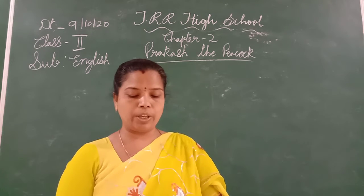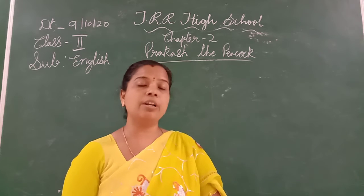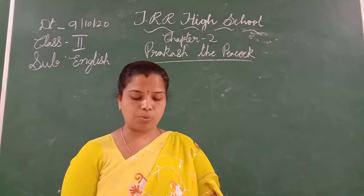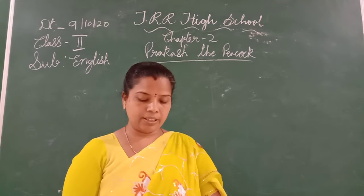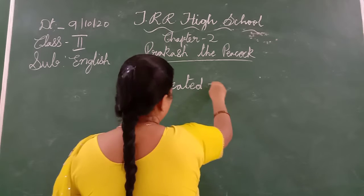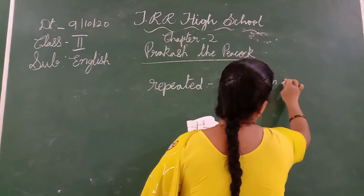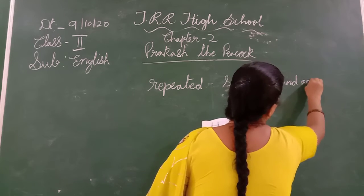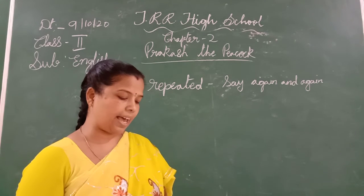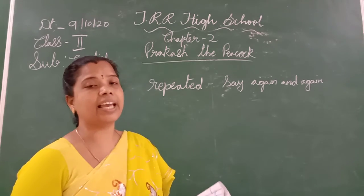Prakash the peacock was very shy. He could not dance in front of other peacocks. The teacher counted 'taiyate, one two, one two.' So this peacock would go to dance in a dance school. The teacher counted 'taiyate' and 'one two, one two' — 'one two, one two,' repeated the little peacock. Repeated means to say again and again.